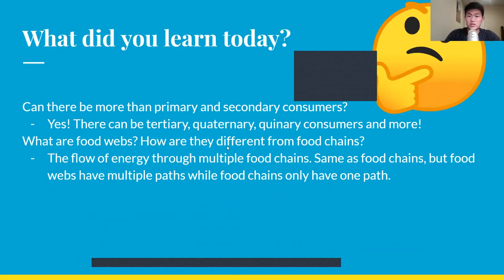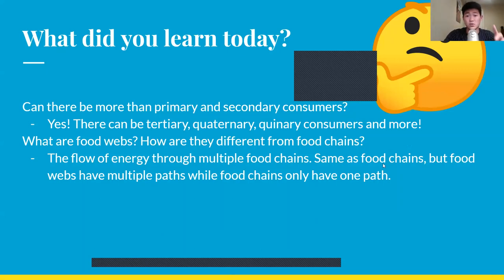Food webs — how are they different from food chains? A food web is the flow of energy through multiple food chains. It's the same concept as food chains with the flow of energy, but food webs have multiple paths while food chains only have one.